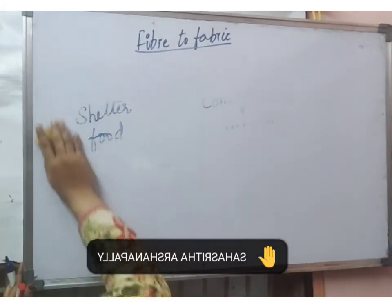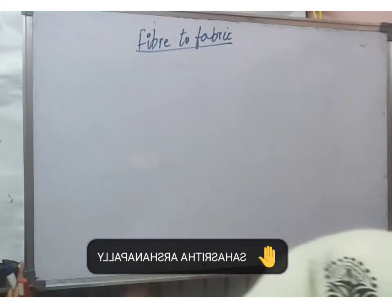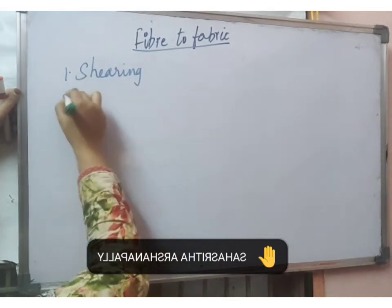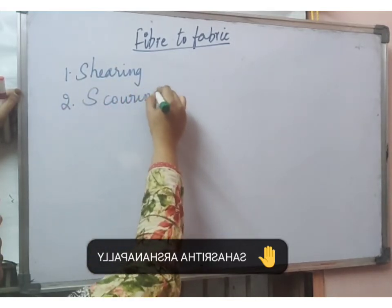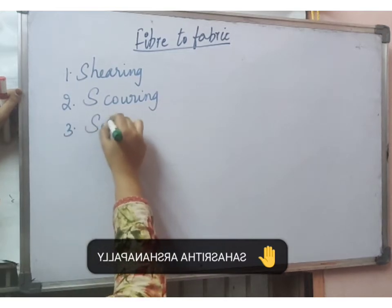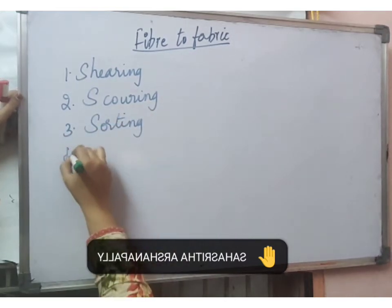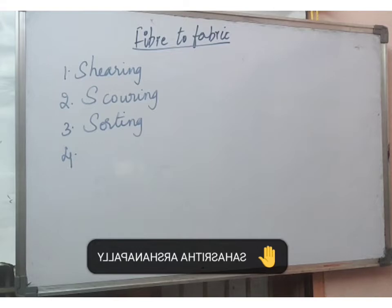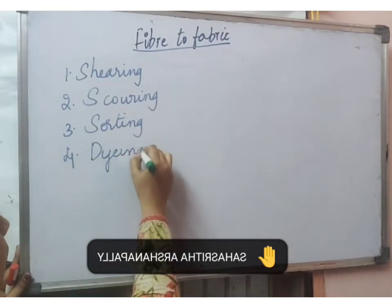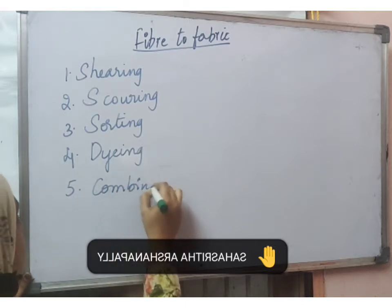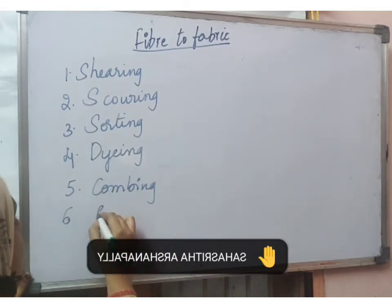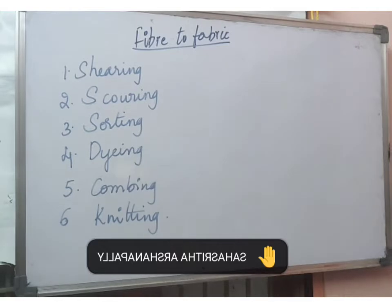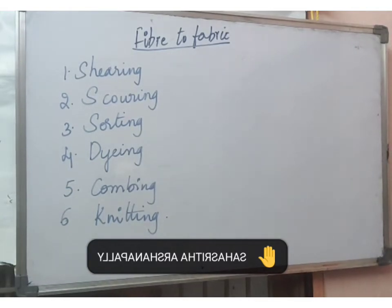When performing the production of wool, the following steps need to be performed: first shearing is done, after shearing comes scouring, then sorting, after sorting dyeing, then combing, and finally knitting. These are the different steps involved in the wool production process.